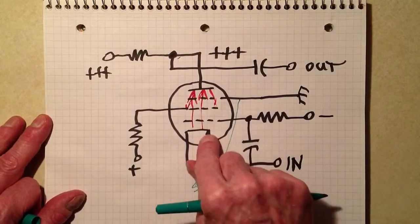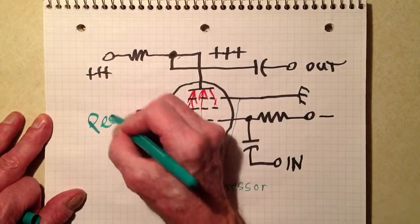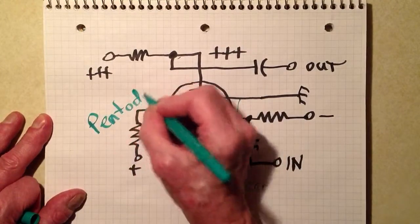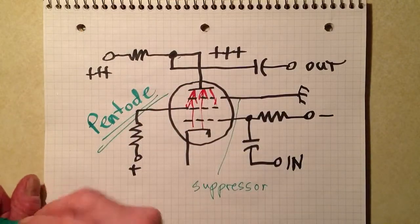And this particular grid became known as the suppressor grid or suppressor. They suppress those secondary electrons. And because it has five elements, one, two, three, four, five, this type of tube became known as a pentode.